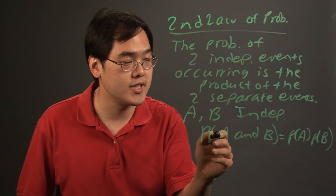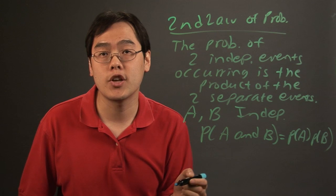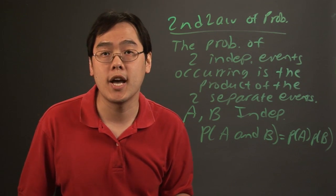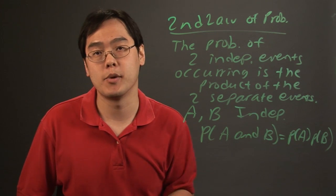So assuming that the events are independent, that they don't rely on each other occurring, the probability of them happening at the same time is simply going to be the two probabilities multiplied together.